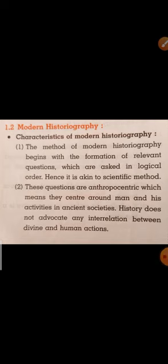Now let us discuss modern historiography. The method of modern historiography begins with the formulation of relevant questions which are asked in logical order; hence it is akin to the scientific method. Modern historiography is quite close to the scientific method because it begins with asking relevant questions closely related to the happenings of events, and these questions are asked in logical order.